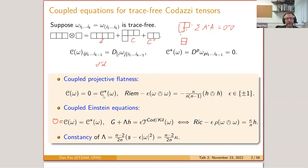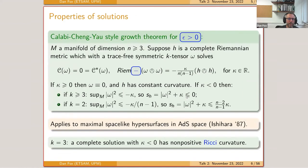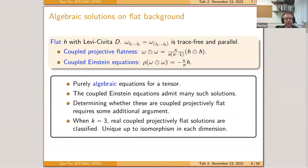The first observation is: if I take H to be a flat metric, all the curvature terms disappear completely and I get purely algebraic equations for the tensor. If I further assume the tensor is parallel, these equations are automatic, reducing to a purely algebraic problem. In that case, the coupled projectively flat equations—for k equals three—admit solutions I can characterize completely: in every dimension there is essentially a unique one. For the coupled Einstein equations there are a great many solutions; for k bigger than three I don't know about characterization.